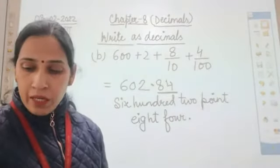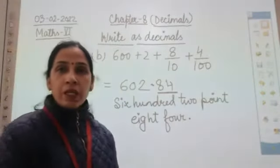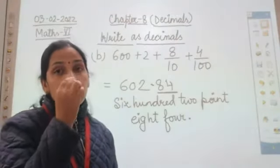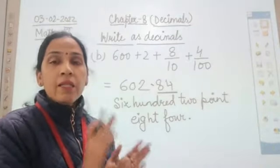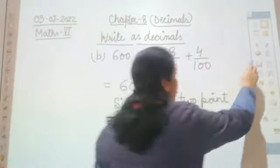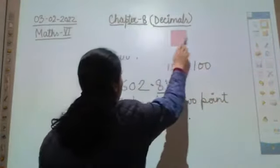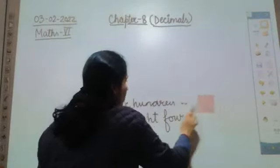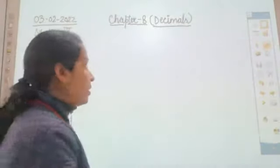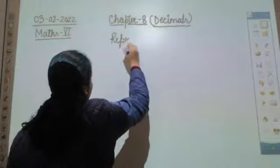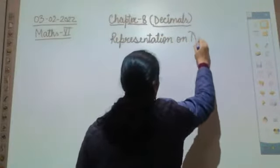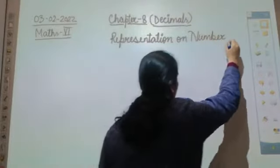Now what you will find in your exercise: how to represent the given decimal number in expanded form using a place value chart, and you will also need to represent the given number on a number line. Let us understand the representation of decimal numbers on a number line.